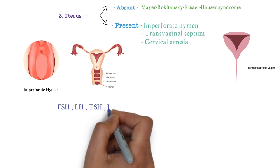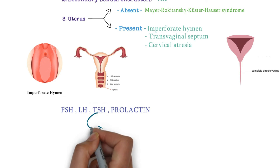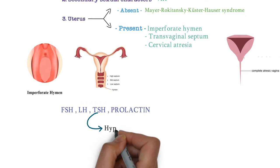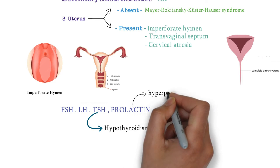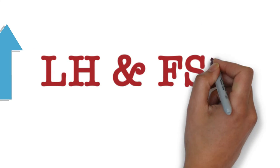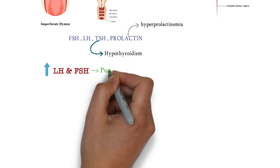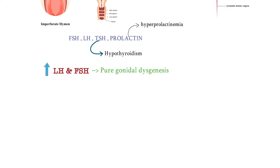We check hormones — Luteinizing hormone, follicle stimulating hormone, thyroid stimulating hormone, and prolactin — when the uterus is present. Possible hormonal causes include hypothyroidism, hyperprolactinemia, or increased LH and FSH, which may indicate pure gonadal dysgenesis. There may also be severe chronic malnutrition.